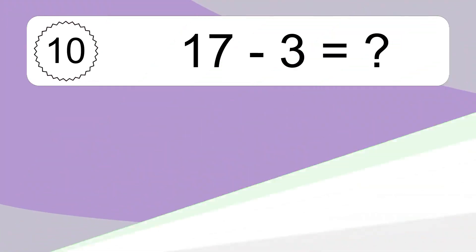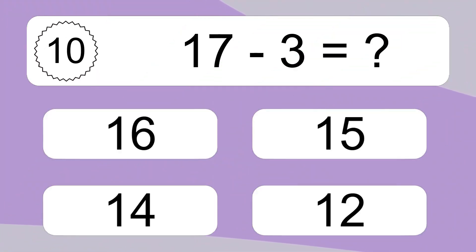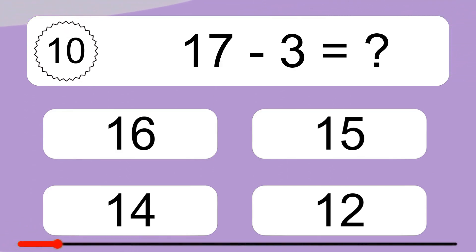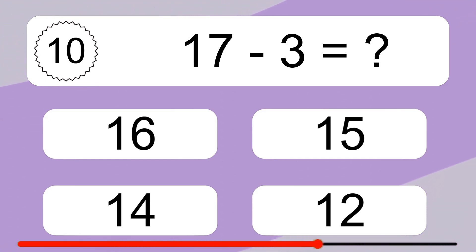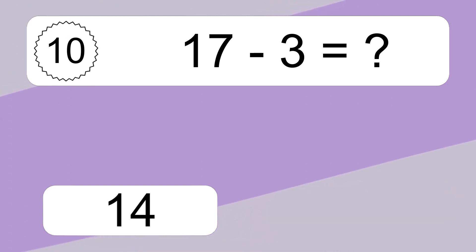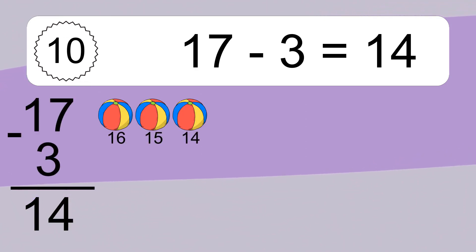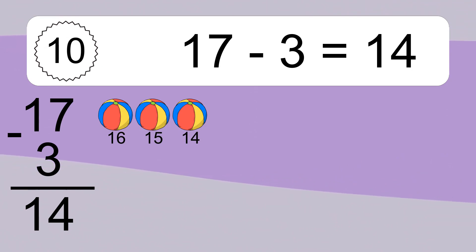17 minus 3 equals what? 17 minus 3 equals 14. Let's count it: 16, 15, 14.